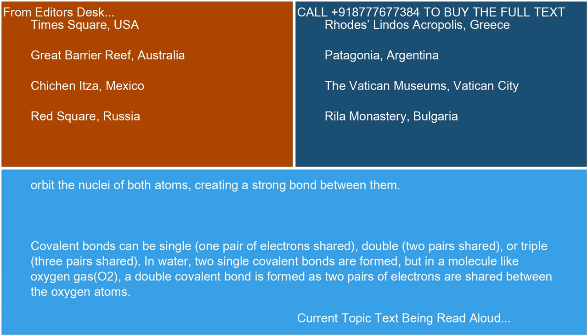Covalent bonds can be single (one pair of electrons shared), double (two pairs shared), or triple (three pairs shared). In water, two single covalent bonds are formed, but in a molecule like oxygen gas (O2), a double covalent bond is formed as two pairs of electrons are shared between the oxygen atoms.